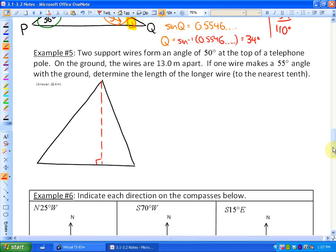Two support wires form an angle at the top of a telephone pole, so this red line is our telephone pole and the angle it creates is 50 degrees. On the ground, the wires are 13 meters apart, so this distance here is 13 meters. If one wire makes a 55 degree angle with the ground, which I'm going to call this angle right here, it states determine the length of the longer wire. One question we first need to answer is which one of these two wires is going to be longer.